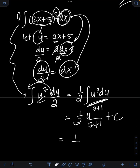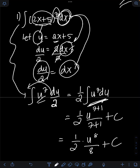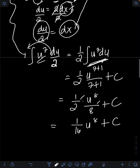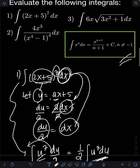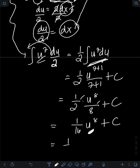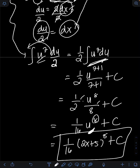Simplifying: we have 1/2 times u to the 8th over 8 plus C. So 1/2 times 1/8 gives us 1 over 16, times u to the 8th plus C. Don't forget to transform back u in terms of the original variable. Since u equals 2x plus 5, the final answer is 1 over 16 times quantity 2x plus 5, raised to the 8th, plus C.